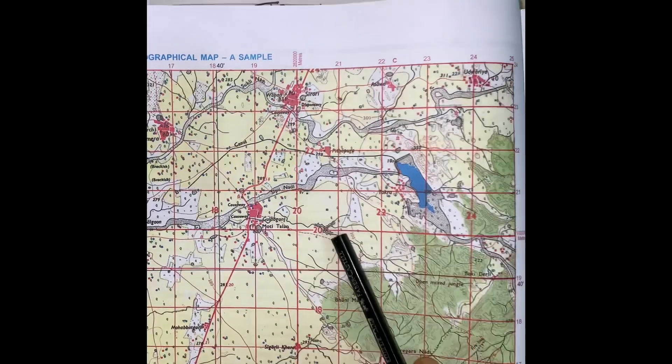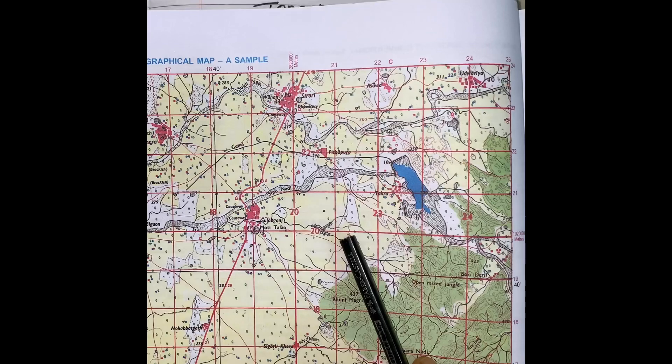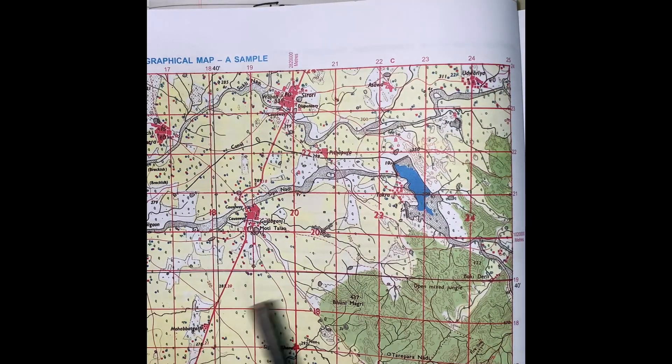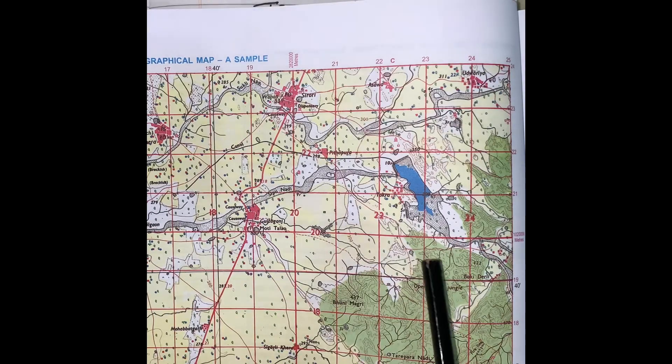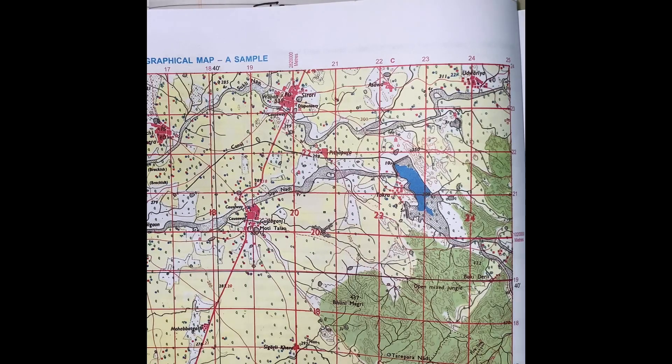This map shows natural features such as mountains, plateaus, rivers, lakes, forests, etc., as well as man-made features such as wells, villages, towns, police stations, post offices, temples, etc.